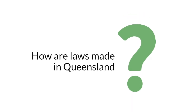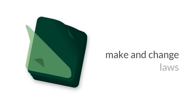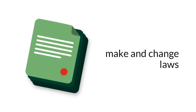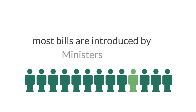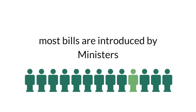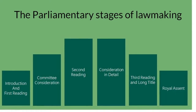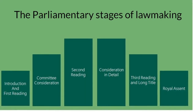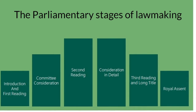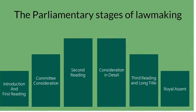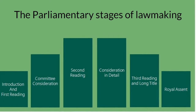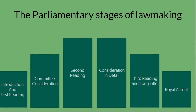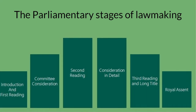One of Queensland Parliament's main functions is to make and change laws. While a bill can be introduced by any Member of Parliament, most are introduced by Ministers. This clip outlines the passage of a normal bill through the Legislative Assembly. In Queensland, there are several parliamentary stages of lawmaking. In this video, we will take you through the procedures from the introduction all the way to Royal Assent.